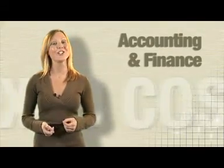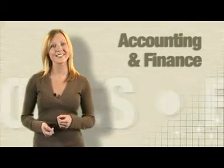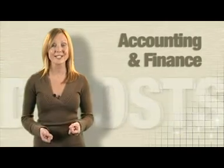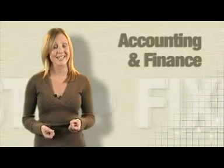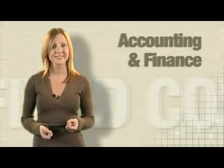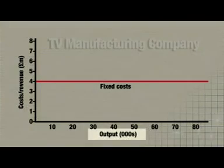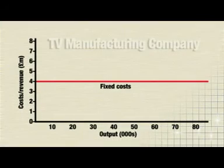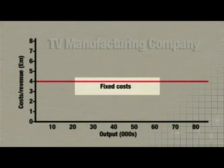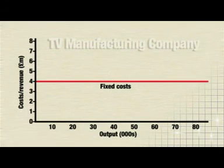We can look at this on a chart — this will help you with understanding break even. See how the chart shows costs going up here in contrast to output along the bottom axis. You can see that in this case, fixed costs are always 4 million pounds, whatever the firm produces.